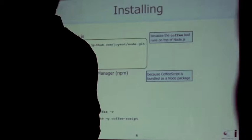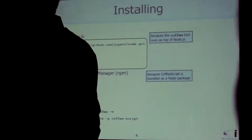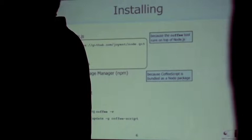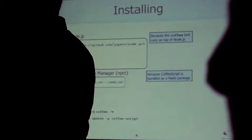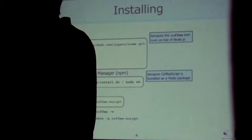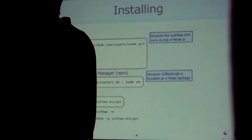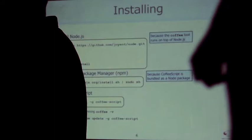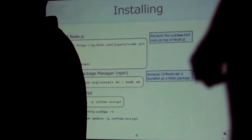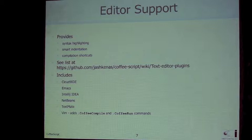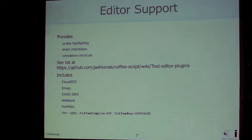To get started, you need to install Node.js because CoffeeScript sits on top of that. After you get Node installed, you need to install the Node Package Manager, because CoffeeScript is a Node package. Once you have that installed, you run: sudo npm install -g coffeescript. You can run it with the -v option to verify it installed correctly. There's support for lots of editors providing syntax highlighting, smart indenting, and shortcuts to compile and run your code from inside your editing environment.